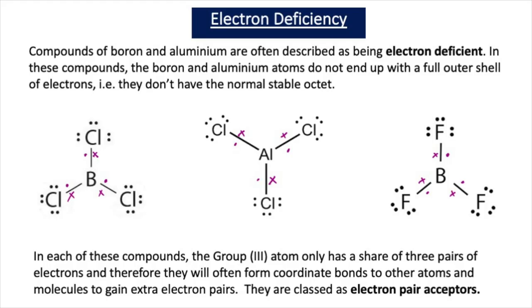In our previous videos, we've learnt that compounds of boron and aluminium are often described as being electron-deficient. In these compounds, the boron and aluminium atoms do not end up with a full outer shell of electrons — they don't have the normal stable octet. Looking at the dot and cross diagrams, boron only has a share of three pairs of electrons and doesn't have the stable octet of eight electrons, and therefore it's described as electron-deficient.